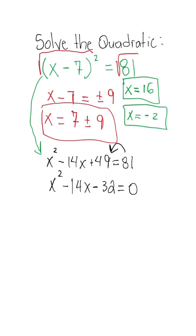And this is when we just do our regular factoring, meaning it's going to multiply to give us 32, add to give us negative 14. So when I look at my factors, I'll have x minus 16 times x plus 2 is equal to 0.